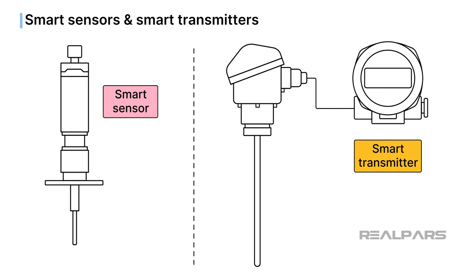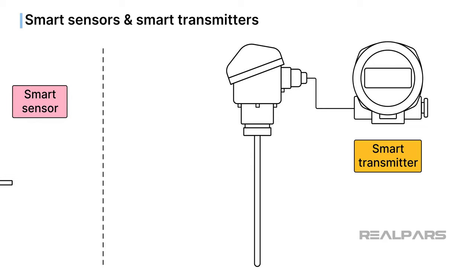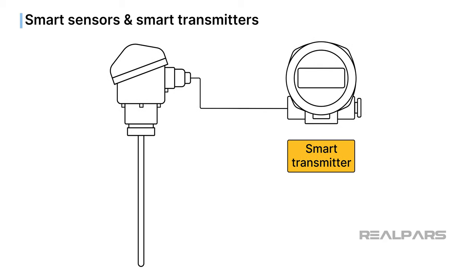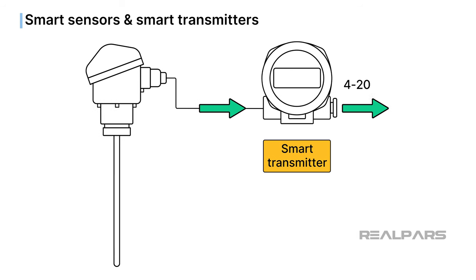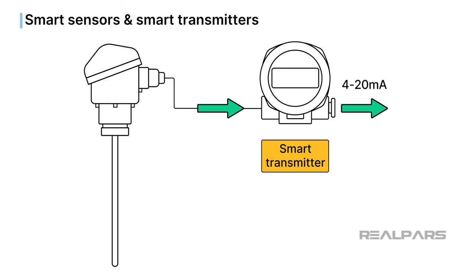What is a smart transmitter? Smart transmitters are devices designed to convert sensor signals — typically originating from traditional sensors — into standardized signals that can seamlessly communicate with control systems.